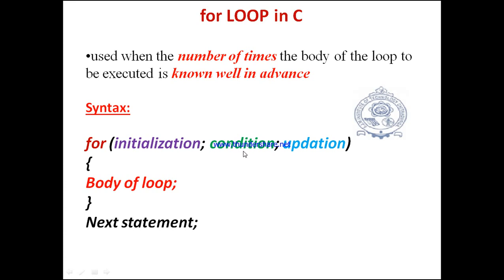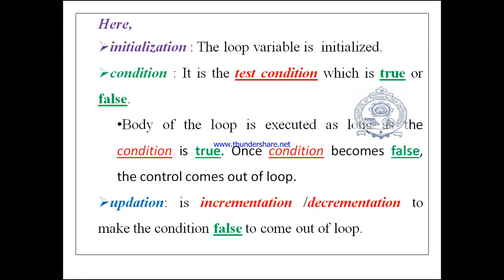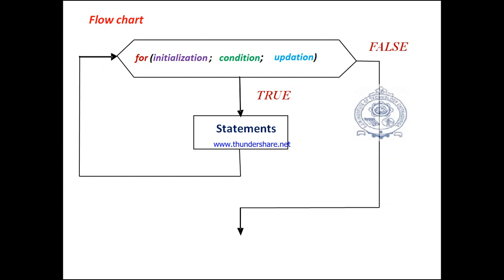Once the condition becomes false, the control comes out of the loop — that is, to the next statement in sequence. The initialization is the loop variable initialized at the beginning; the condition is the test condition which evaluates to true or false; the body of the loop is executed as long as the condition is true; and the updation is either incrementation or decrementation depending upon the condition, to eventually make the condition false.